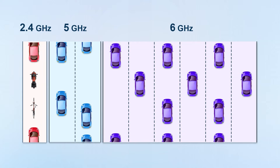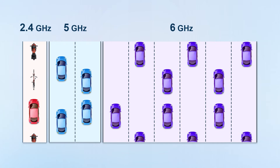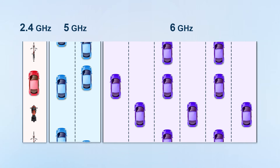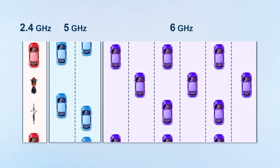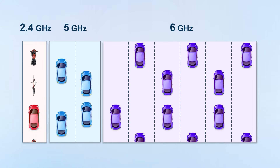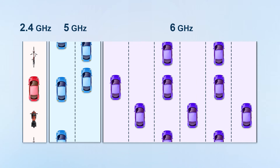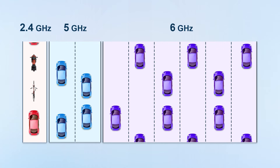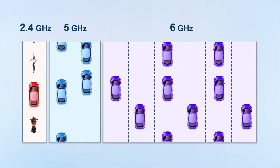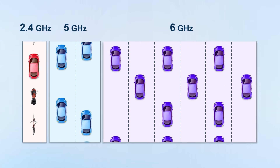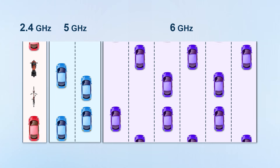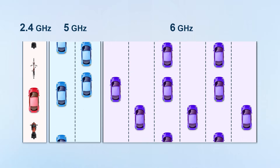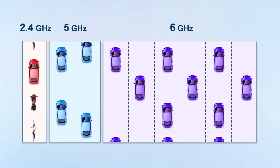5 GHz is a highway with many lanes and only allows cars, offering high efficiency and high speed. While 6 GHz is a highway with even more lanes, the widest lanes, no congestion at all, and the fastest speed.